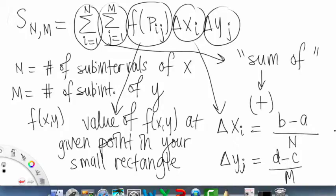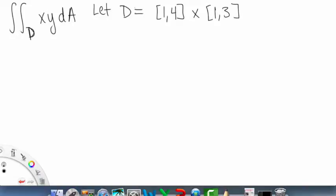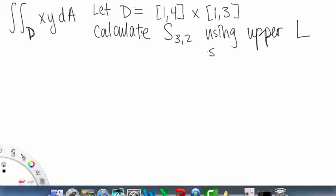All right, so keep all of this in mind, and we're going to try to tackle an example. Let's say we're given the following problem. Double integral over d, our domain, of xy and then dA. We're going to approximate this using Riemann sums. And the problem also gives this. Let d equal [1,4] × [1,3]. So this will all be given, and then they'll tell us calculate s sub 3 comma 2 using upper left sample points.